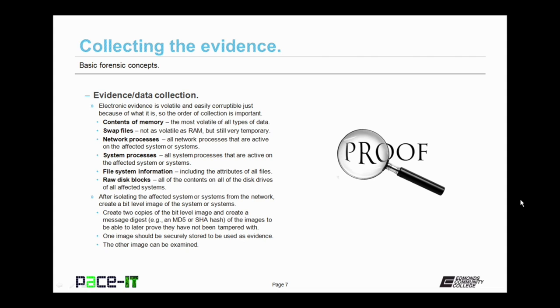So let's talk about the evidence and data collection process. Electronic evidence is volatile and easily corruptible, just because of what it is - it's magnetic data. So the order of collection is important. The first thing that should be collected are the contents of memory or RAM. This is the most volatile of all types of data. Next are swap files. They're not as volatile as random access memory, but are still very temporary in nature. Then all network processes need to be documented, at least all of those that are active on the affected system or systems. After documenting network processes, next up are the system processes, and that is all system processes that are active on the affected system.